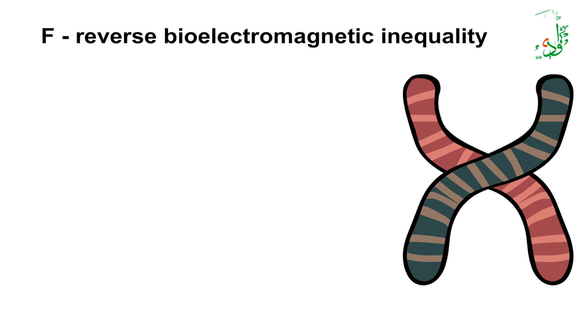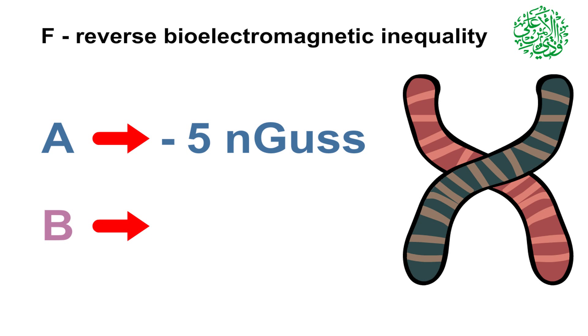Reverse bioelectromagnetic potential difference. In this form of inequity, which is rare, the bioelectromagnetic charge of chromosome A1 that should be plus five nanogausse is reversed and changes to minus five nanogausse. Also, the bioelectromagnetic charge of chromosome B1 that should be minus five nanogausse is reversed and changes to plus five nanogausse.